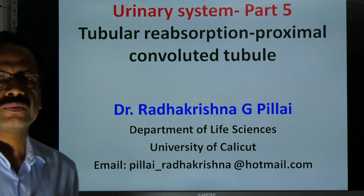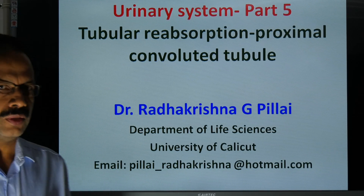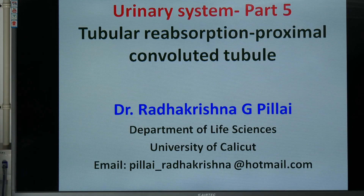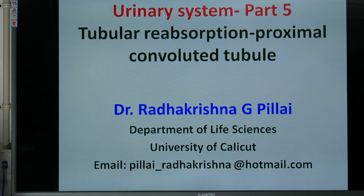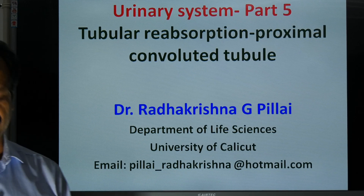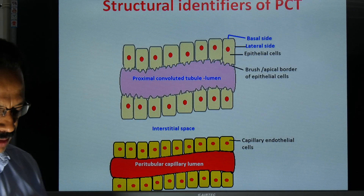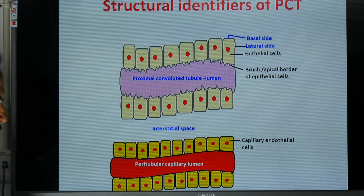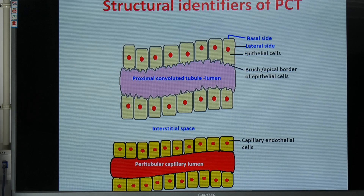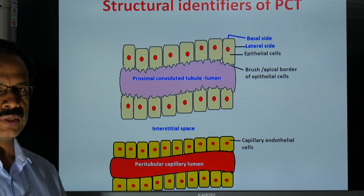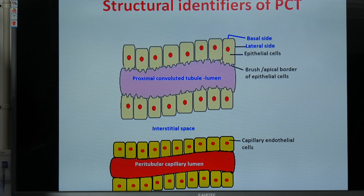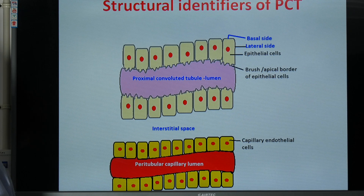This is the fifth talk on the urinary system. This deals with tubular reabsorption at the proximal convoluted tubule. At the beginning, I will explain the different sides of the cells through which the reabsorption happens from the proximal convoluted tubule.